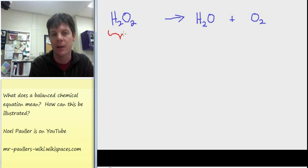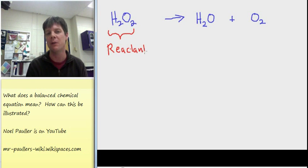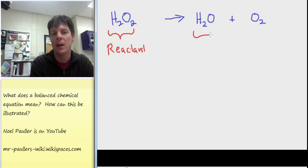Now, let's take a closer look at this equation. First, we want to identify the reactants. So that is the hydrogen peroxide. We're identifying that as a reactant, which means this is what we have before the chemical change has taken place.